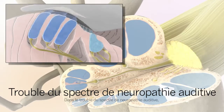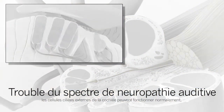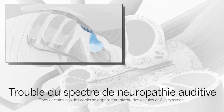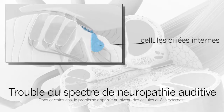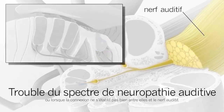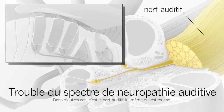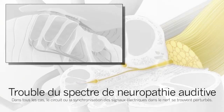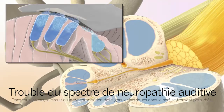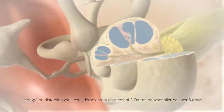With Auditory Neuropathy Spectrum Disorder, the outer hair cells in the cochlea may work well, but a problem occurs after this point in the hearing pathway. In some cases, there is a problem with the inner hair cells or a poor connection between them and the auditory nerve. In other cases, the auditory nerve itself is affected. In all cases, the pattern or timing of the electrical signals in the nerve is disrupted. The degree of this distortion is very different from child to child and can range from mild to severe.